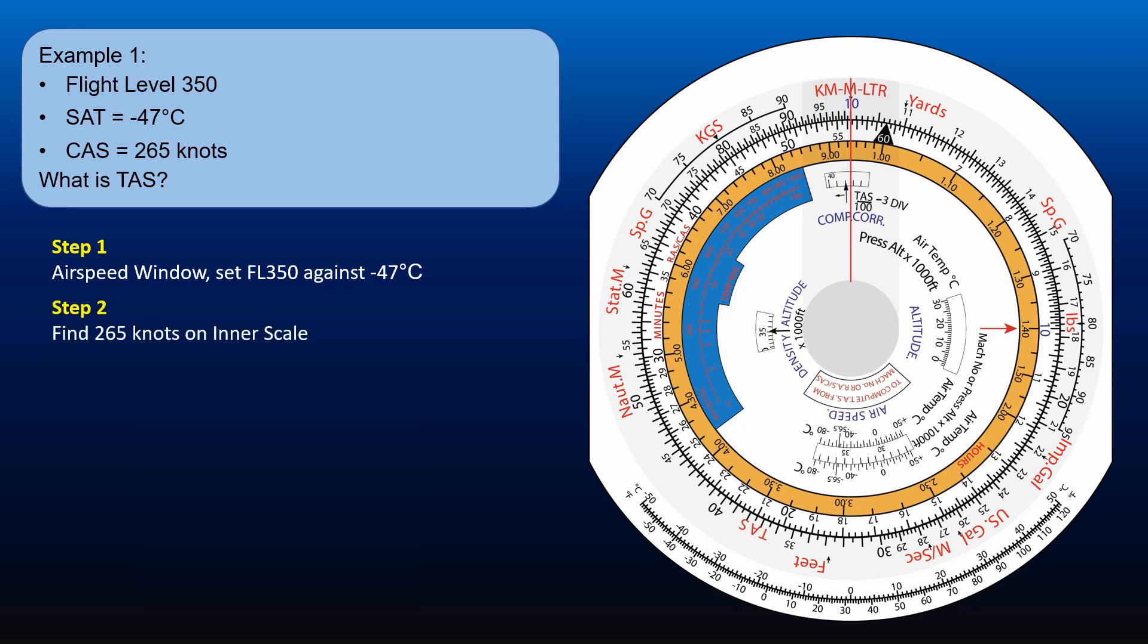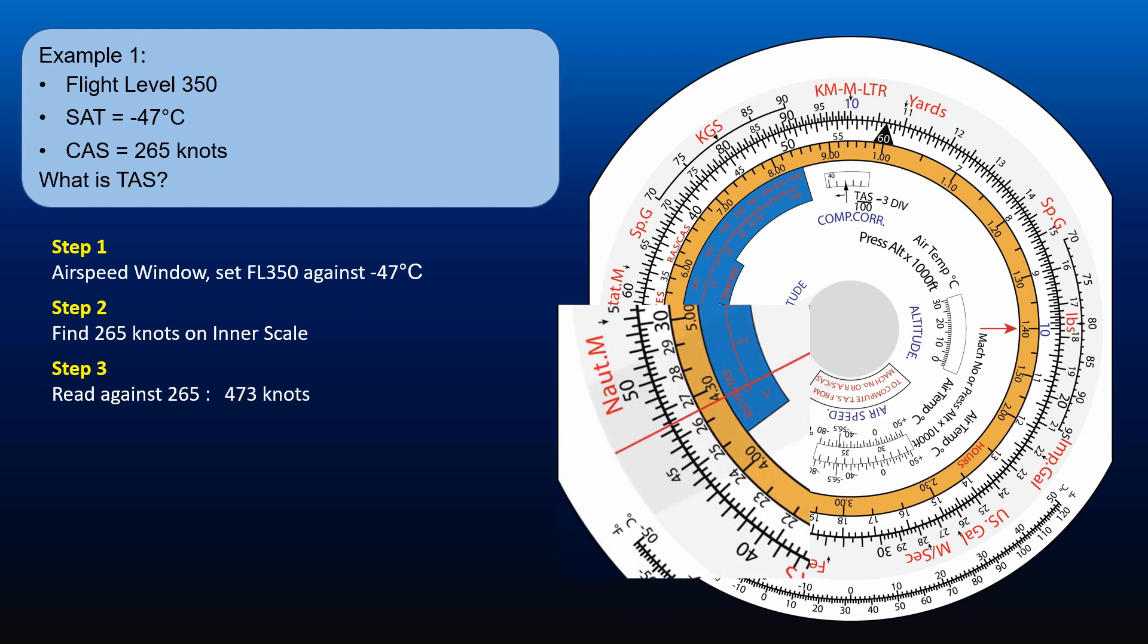Next, find 265 knots on the inner scale. Now, read off the answer on the outer scale. You should get 473 knots TAS.